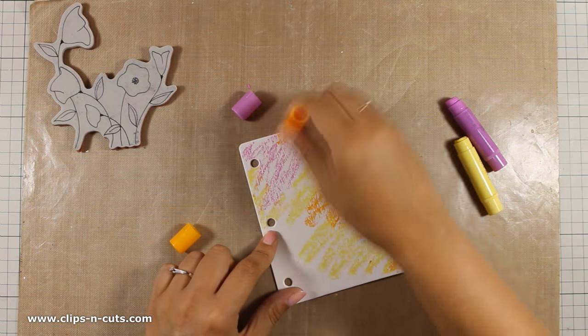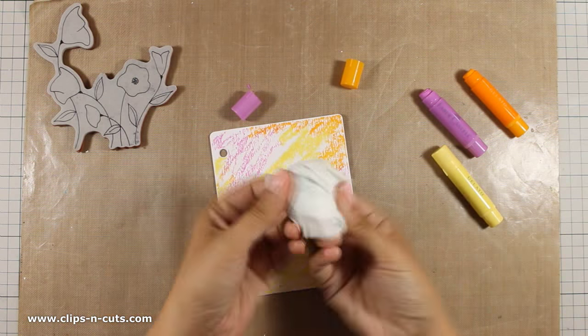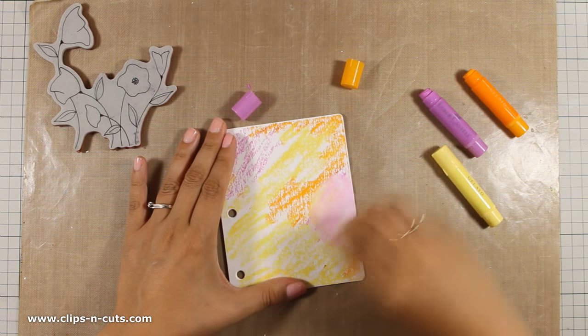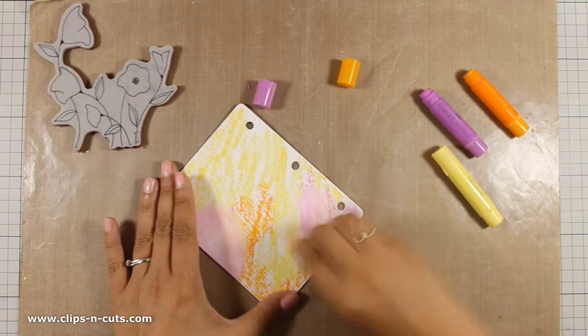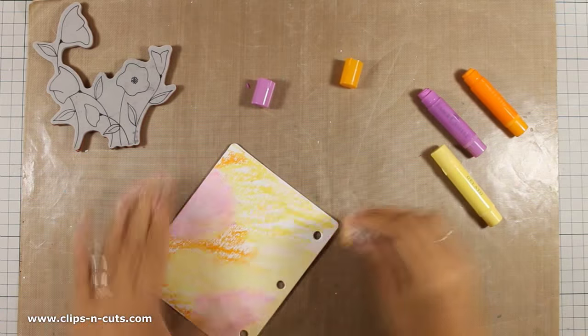I'm currently applying the first layer of color and I will blend it with my finger, or you can blend it with a baby wipe. The baby wipes that I'm using are not very wet or they will remove the color that I have already applied with my gelatos.